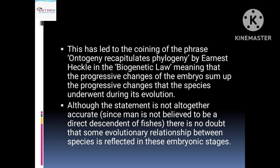This led to the coining of a phrase. Ernest Haeckel stated the Biogenetic Law: 'Ontogeny Recapitulates Phylogeny.' The development of an organism expresses the evolutionary history and all the intermediate forms of its ancestors — that is phylogeny. When a child is in the mother's womb, the evolutionary forms of its ancestors are shown. Although this statement is not altogether accurate — since man is not believed to be a direct descendant of fishes — there is no doubt that some evolutionary relationship between species is reflected in this embryonic stage, showing some evolutionary link.